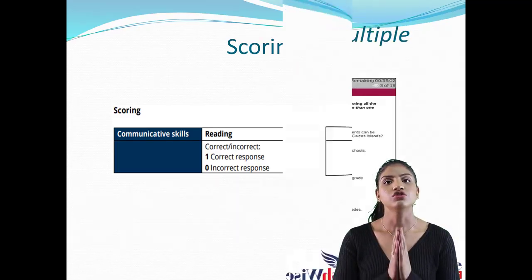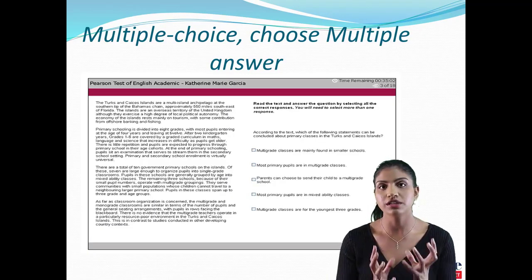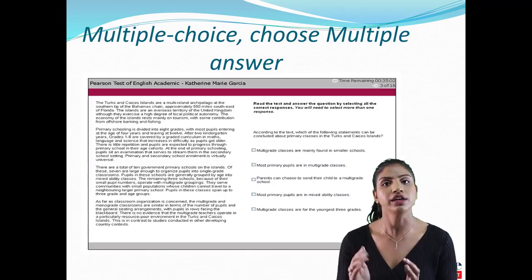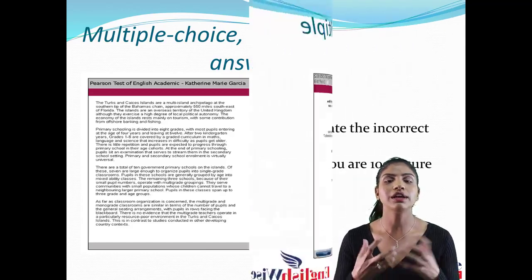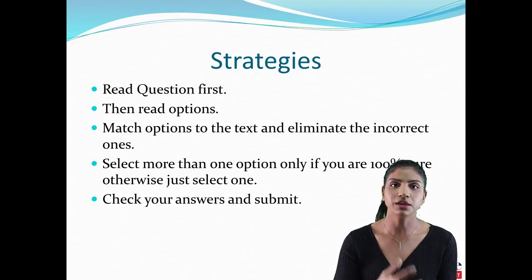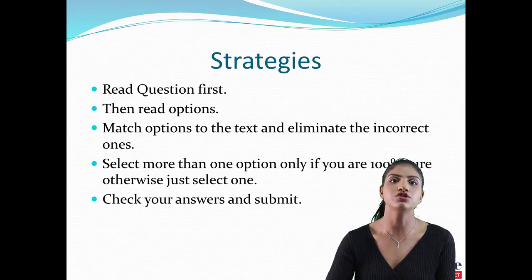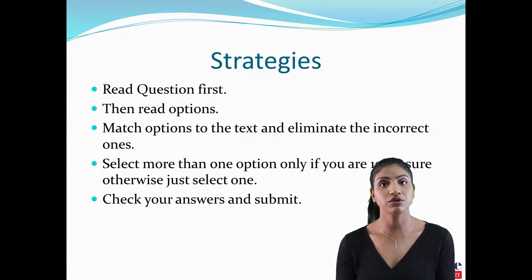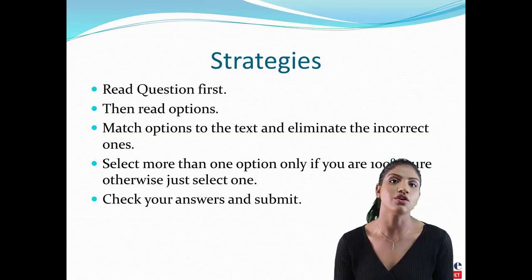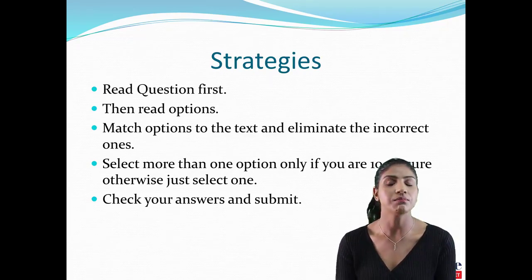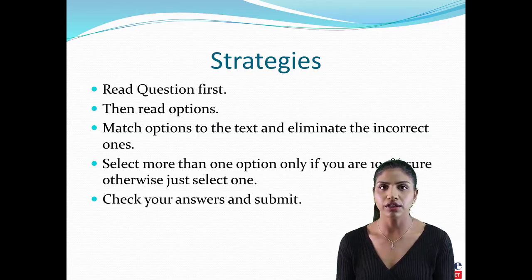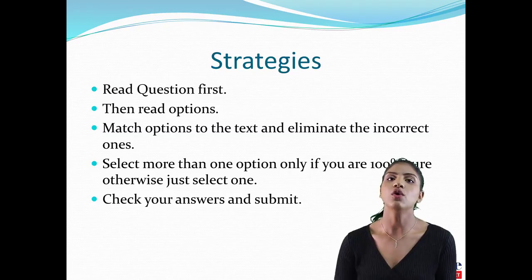Now for multiple choice multiple answer, you again get two to three questions. The question type is similar but the text is longer, the question and options are longer, and there are more options — typically five, six, or even seven instead of four. You must read the question, find the answer in the text, and select more than one correct option, then press next.